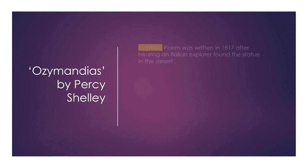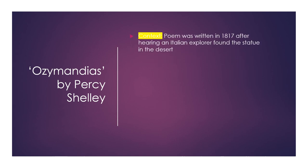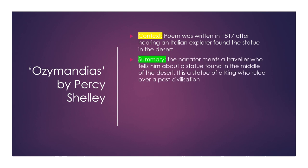So, Ozymandias by Percy Shelley. The poem was written in 1817 after he heard about an Italian explorer who had found a statue in the desert. The summary of the poem is the narrator meets a traveller who tells him about a statue found in the middle of the desert. It is a statue of a king who ruled over a past civilisation. If you don't know already, have a brief look on the internet for Rameses II, who we assume this poem is about.